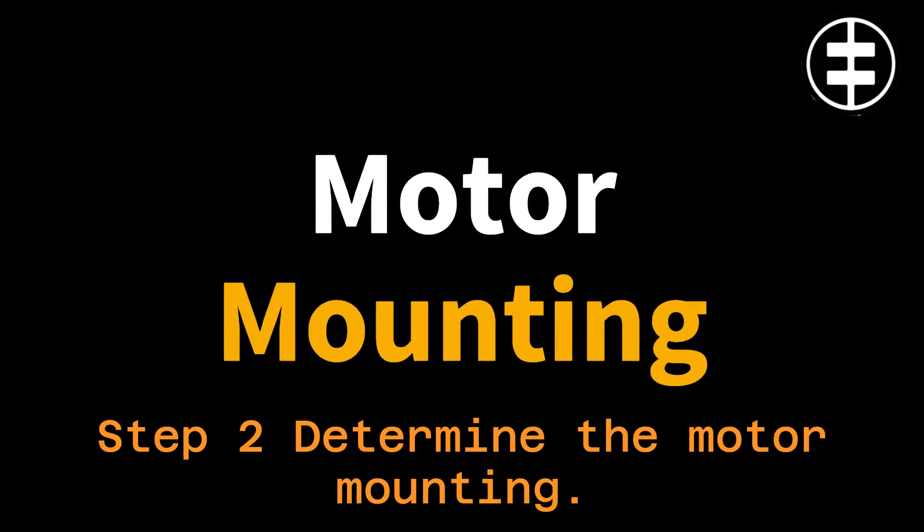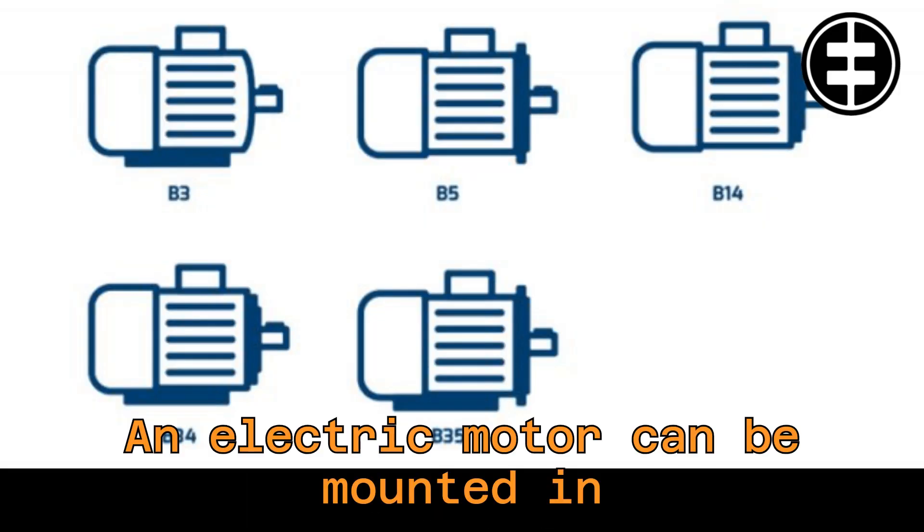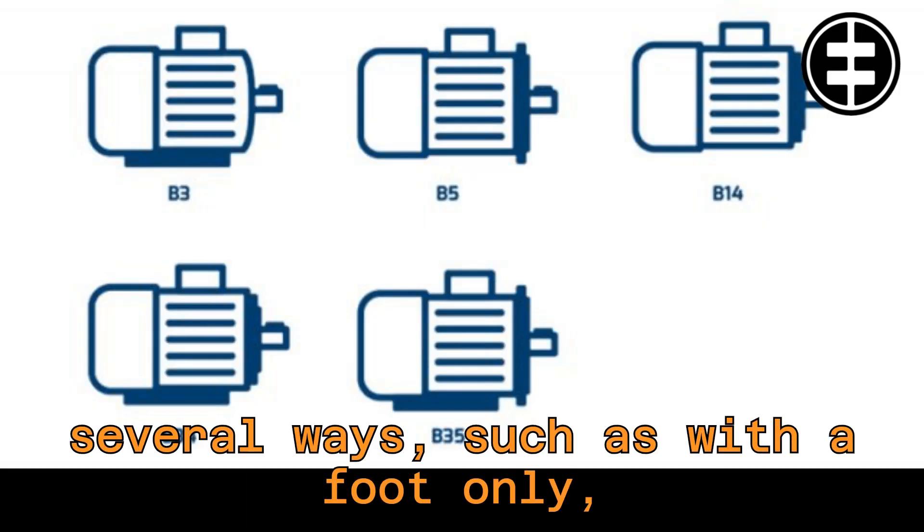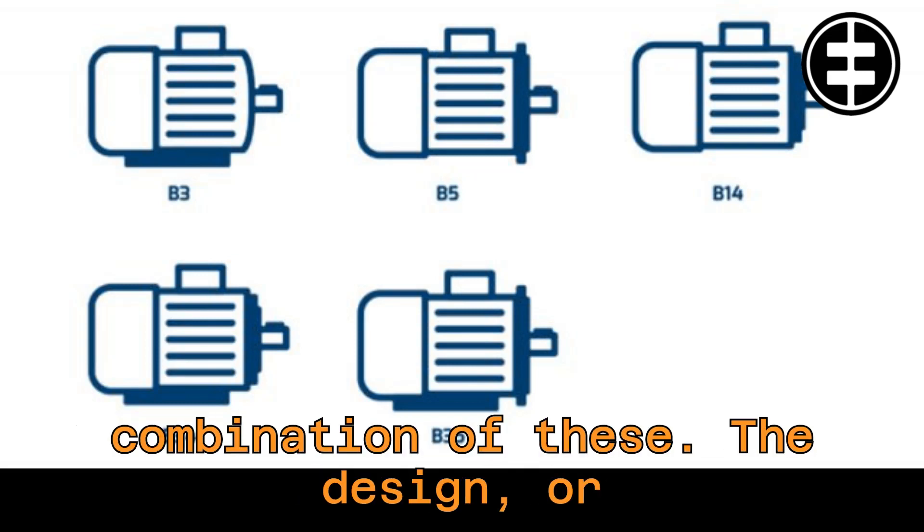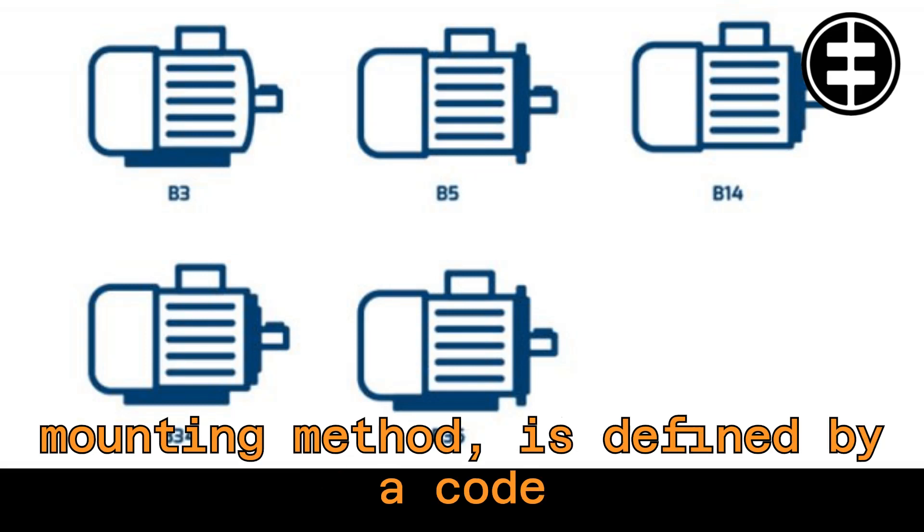Step 2. Determine the motor mounting. An electric motor can be mounted in several ways, such as with a foot-only, an inner flange, an outer flange, or a combination of these. The design, or mounting method, is defined by a code from the European IEC 34-7 standard.